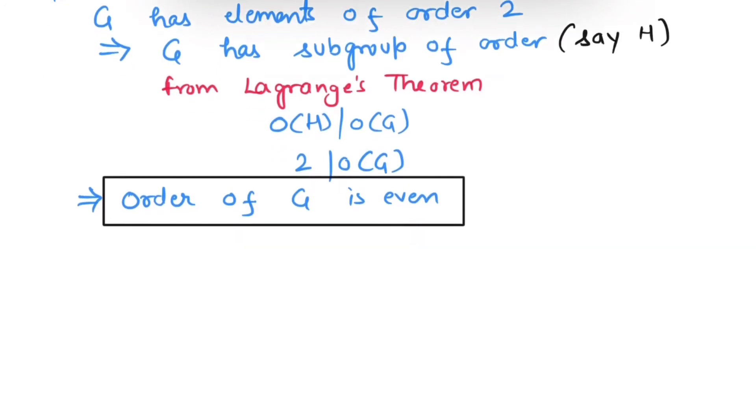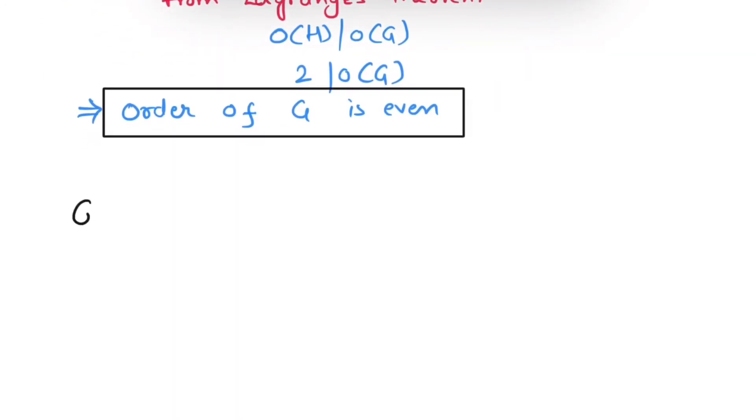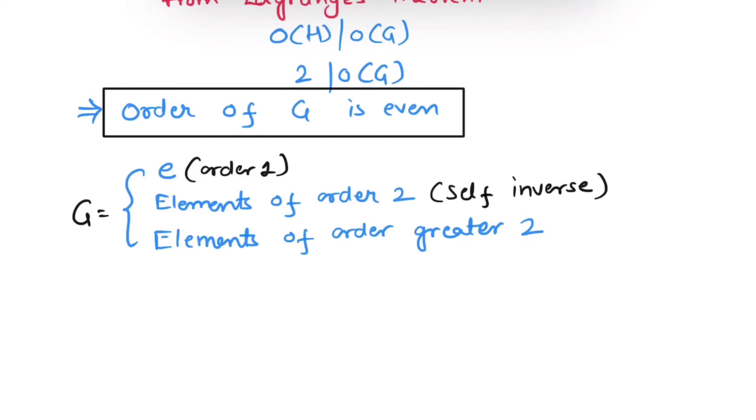Now let's categorize elements of G according to their order. G will have an identity element e whose order is 1, elements of order 2 which are self-inverse, and elements of order greater than 2 which are not self-inverse and come in pairs, hence their number is even. Now let's find the order of group G. Order of G will be 1 for identity element e, plus 60 for elements of order 2 as given in the question.